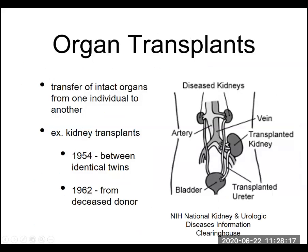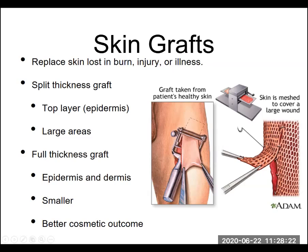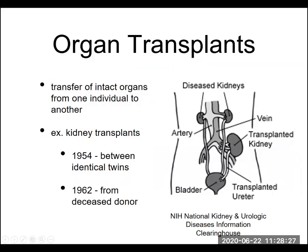Organ transplants are pretty much the same idea, but instead of taking a small section of skin and suturing it over, we're actually taking an intact organ. A good example is a kidney — you take a complete kidney from one individual and transplant it into a person with diseased kidneys. Normally we'd have two kidneys in position, but now we have a transplanted kidney placed in to take up some of the function lost by the diseased kidneys.